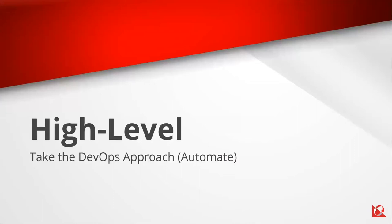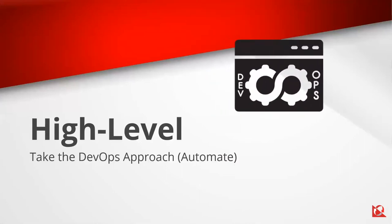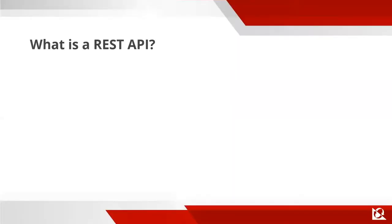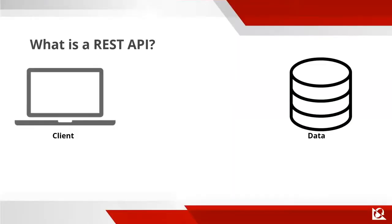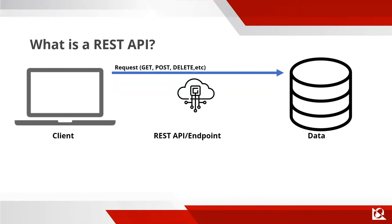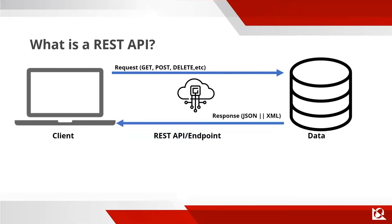Now we'll get into the high level — talking about taking the DevOps approach and what REST APIs are. A REST API is pretty simple: you have a client that needs access to data — that client could be a process or an actual person. You use the REST API to get that data by making a request to either get, post, update, delete, or list, using HTTP verbs. The REST API replies back typically in JSON or XML format.